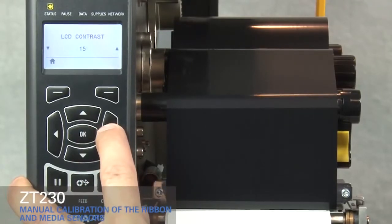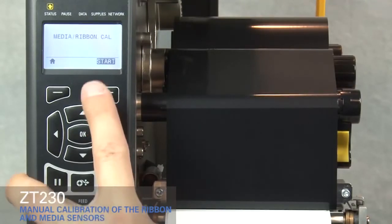Press right arrow key until you get to media ribbon calibration. Press Start.